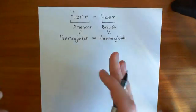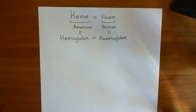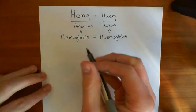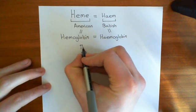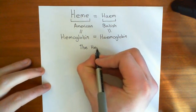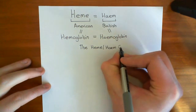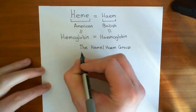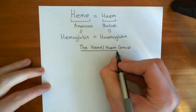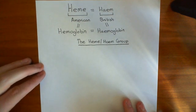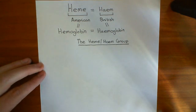So, heme, haem, hemoglobin, haemoglobin — whichever way you want to spell it, they're referring to the same thing. Now let's begin by looking at the heme/haem group. This is basically a large ring structure known as a porphyrin ring with an iron atom coordinated at the centre.